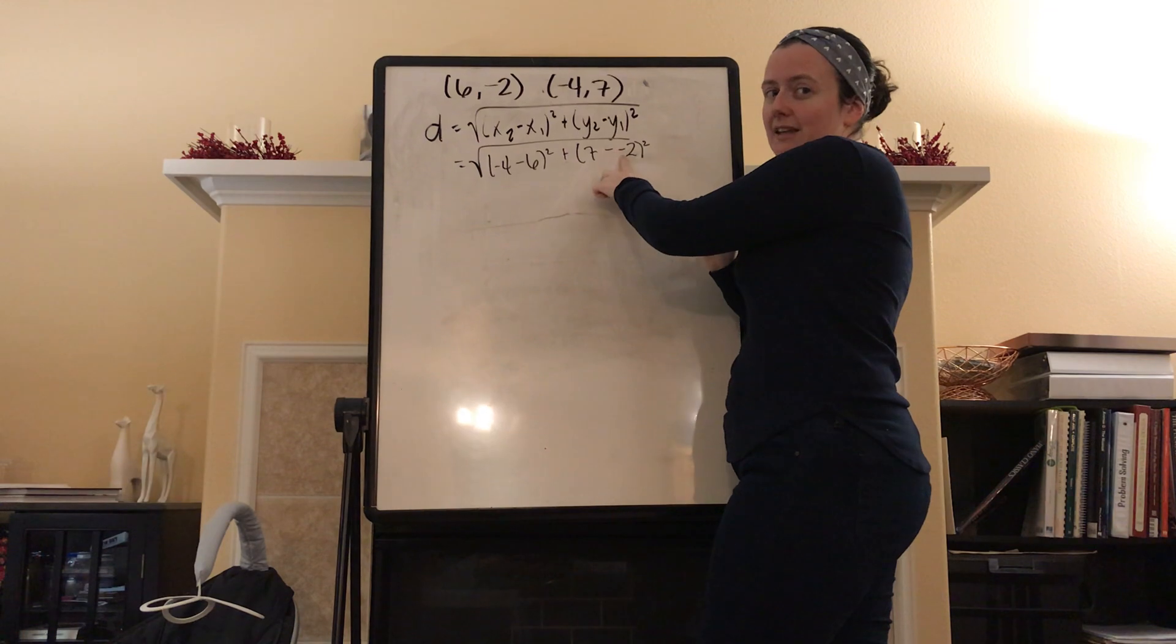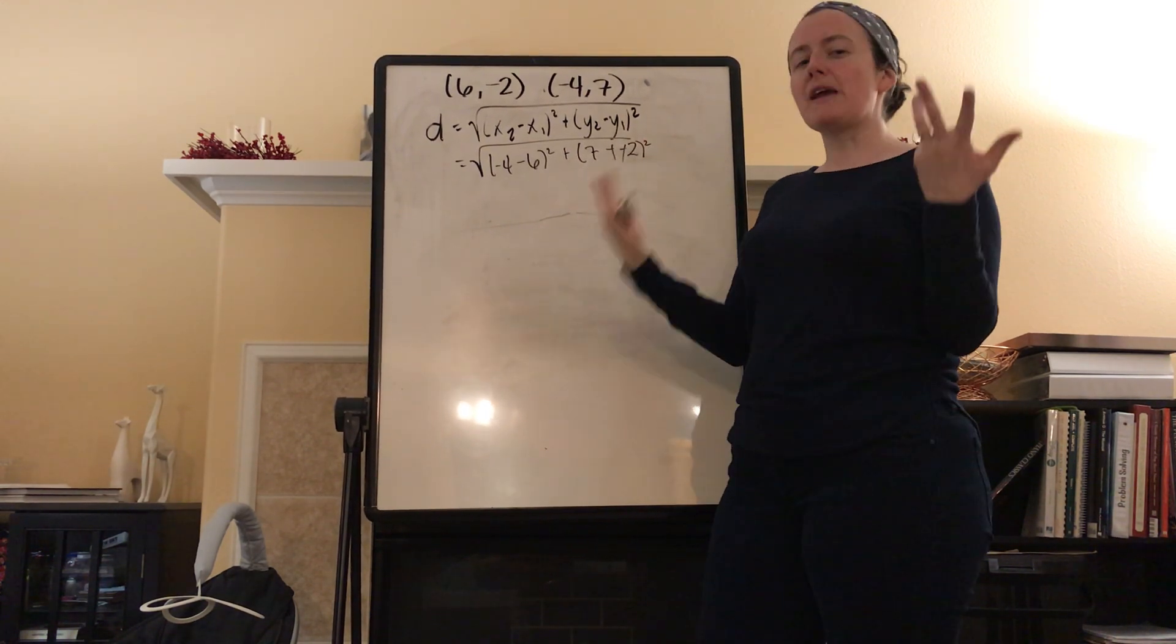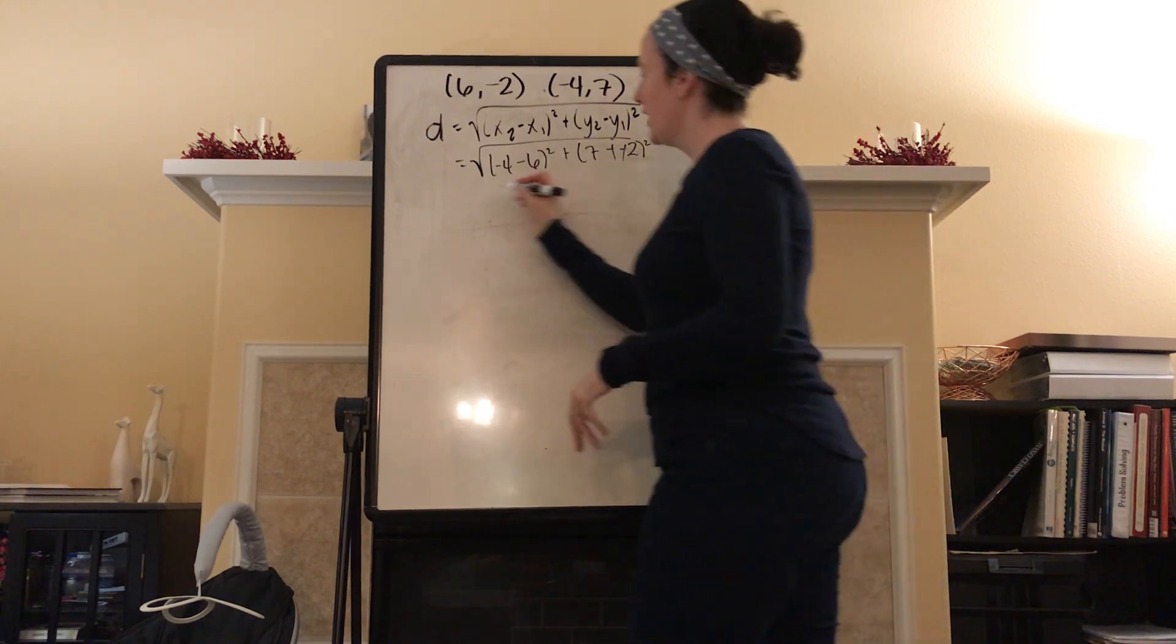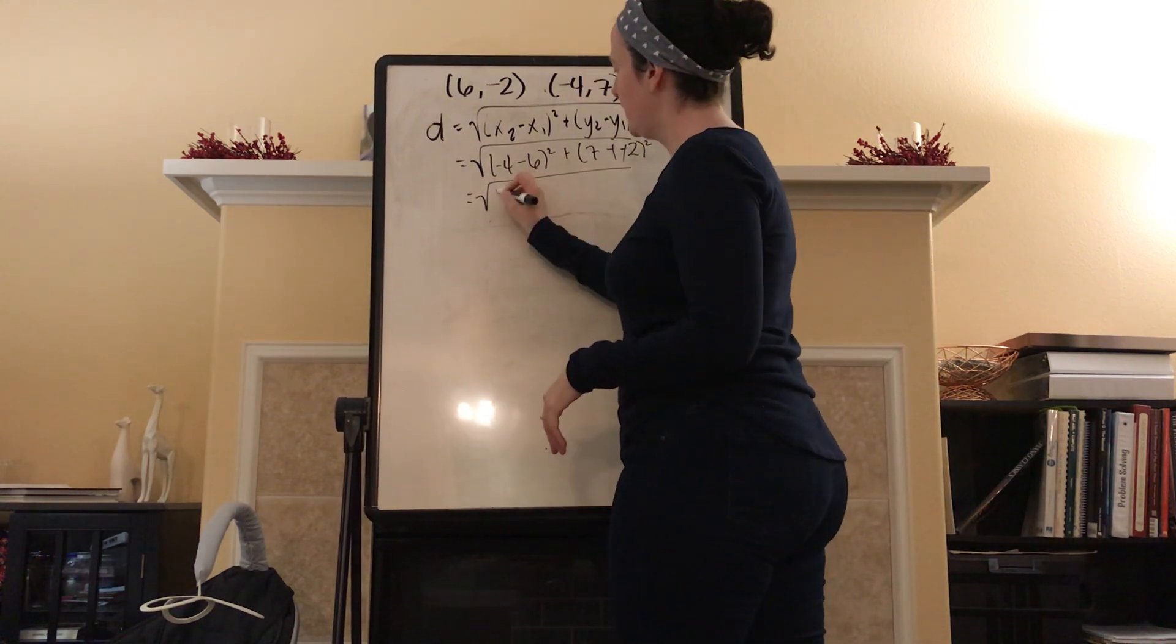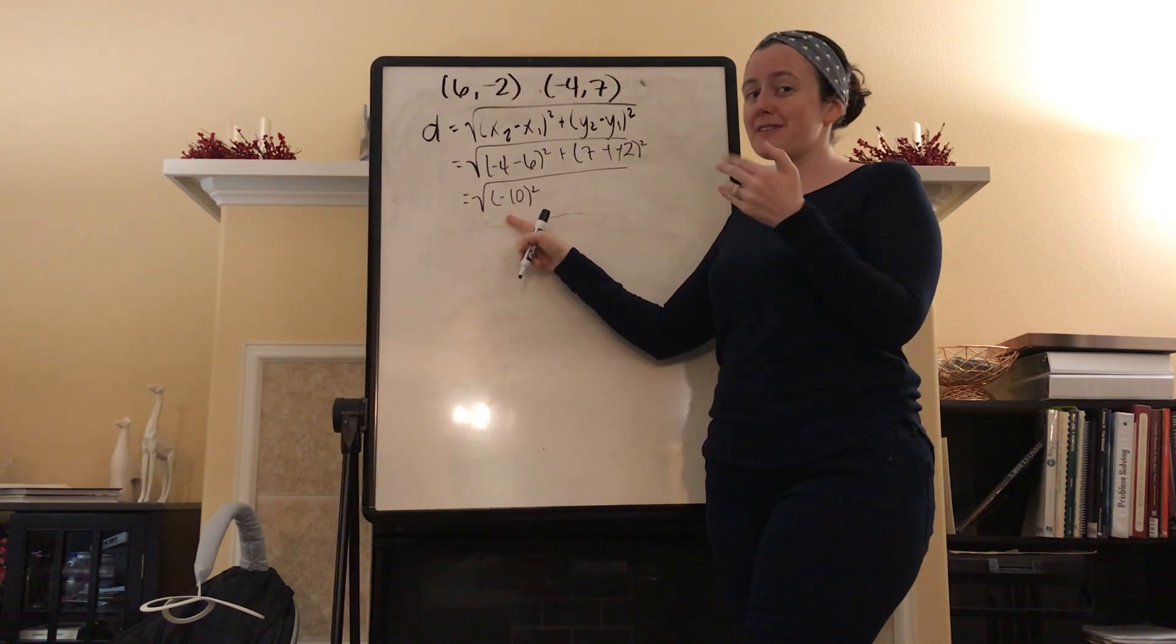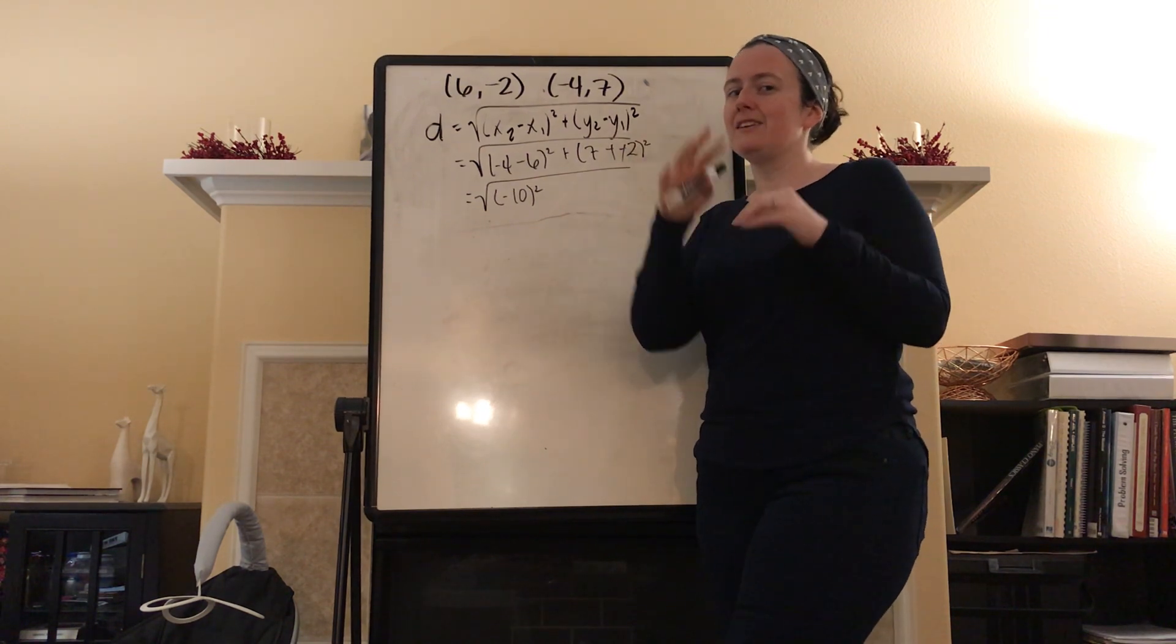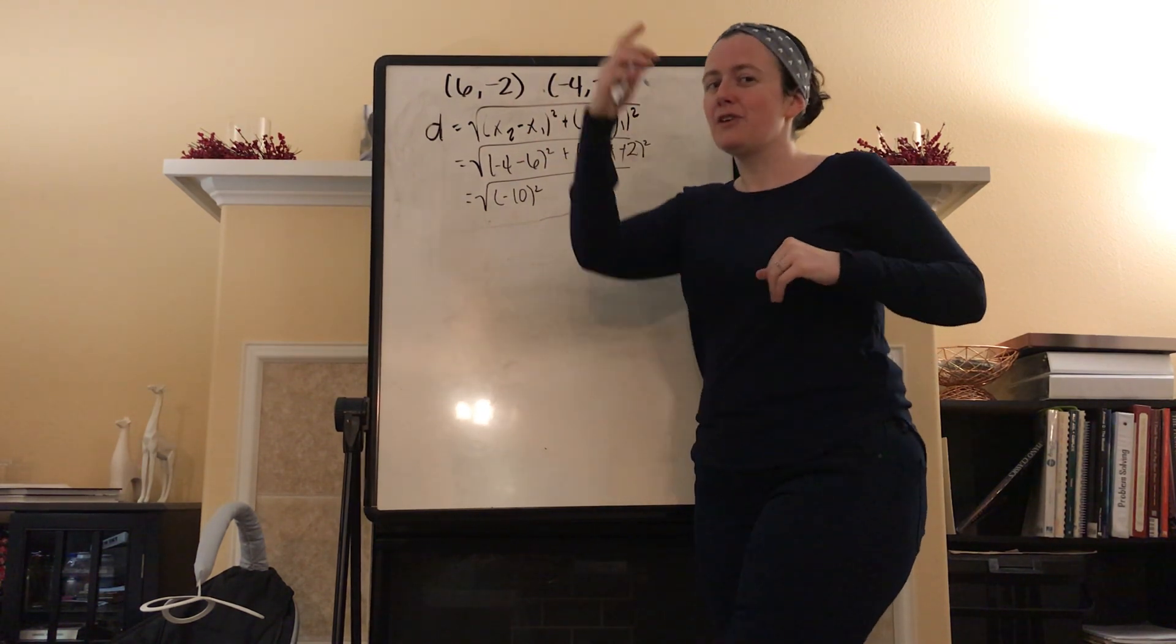I see a minus a negative. Oh no! Ninja skills to the rescue! I'm going to go ahead and slash slash to make that plus 2. This is equal to the square root of -10 squared. Make sure that your numbers stay in parentheses. That negative also gets squared. So it's not like negative 10 squared. It's -10 squared.